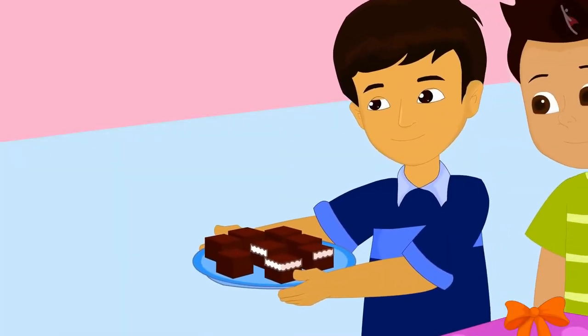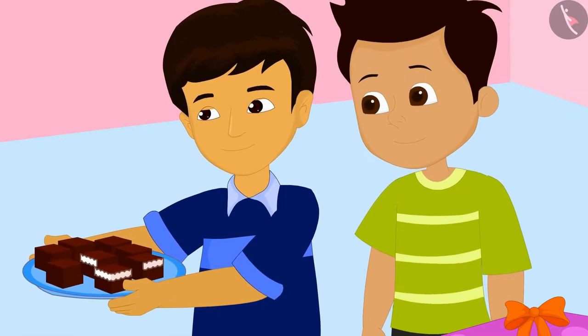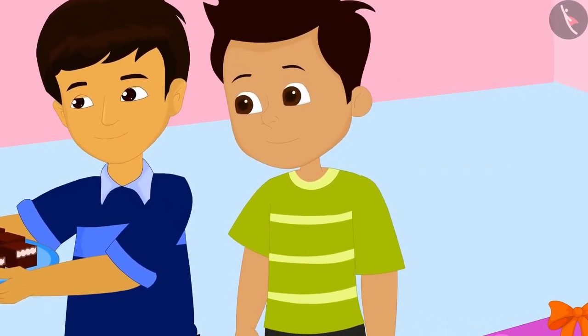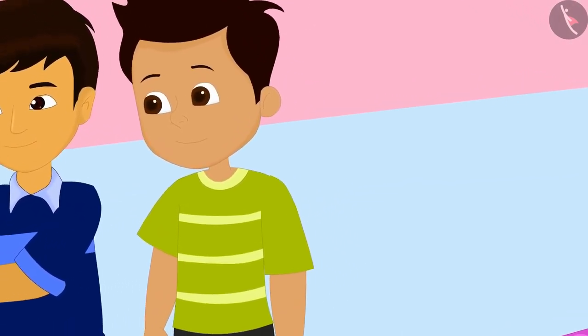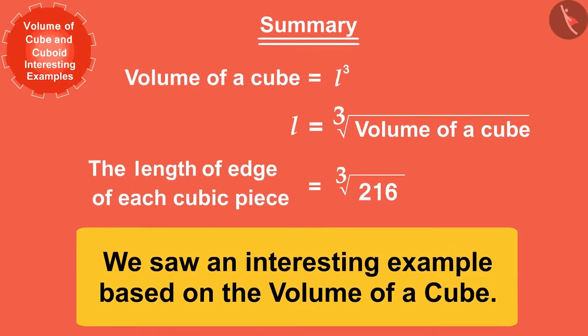Manas cut the cake into eight cubes and the two friends went to share the cake with their other friends. In this video we saw an interesting example based on the volume of a cube. Hopefully you now have a good understanding of the volume of a cube and a cuboid.